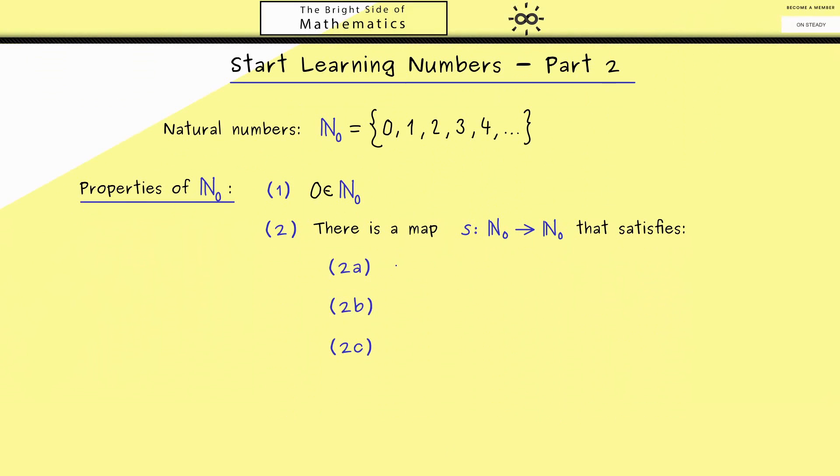First of all, the map s is injective. In other words, different natural numbers have different successors. This gives us the visualization that the natural numbers lie ordered on a straight line. If s wouldn't be injective, we could have loops in this picture.